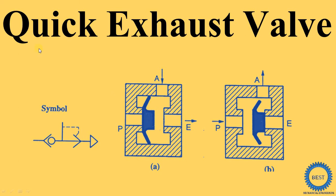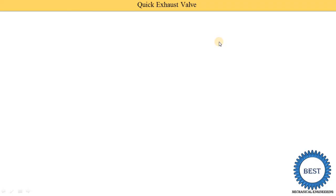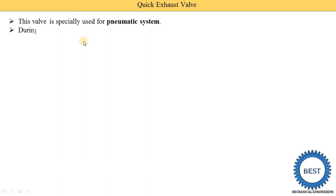In this video I explain the quick exhaust valve. From the name we can understand its function — it is used for the quick exhaust of air. This valve is used in a pneumatic system and is not used in hydraulic systems. We will first understand the basics and then the construction and working.